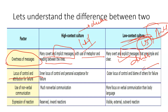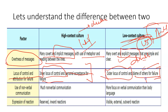The next difference is locus of control. In high context cultures, there is an inner locus of control and personal acceptance of failure. If we are not able to do something, we accept our failures and say it is because of our own reasons. On the other side, in low context cultures, there is an outer locus of control — people blame external factors. They will always blame situational factors or other people for their failure rather than taking responsibility themselves.